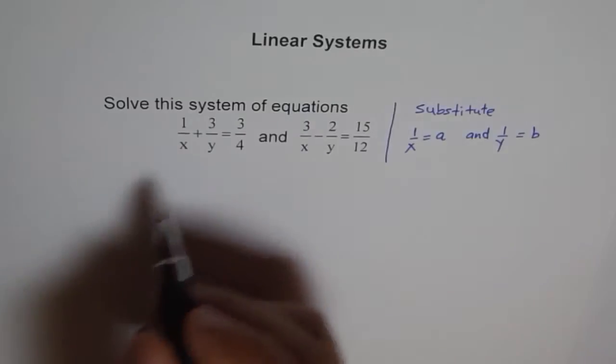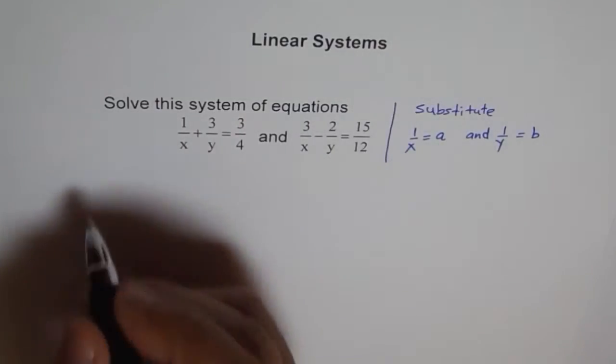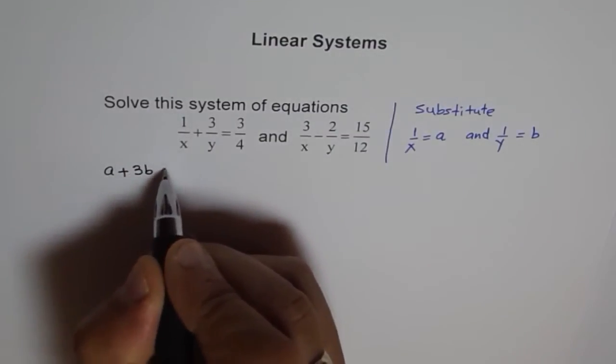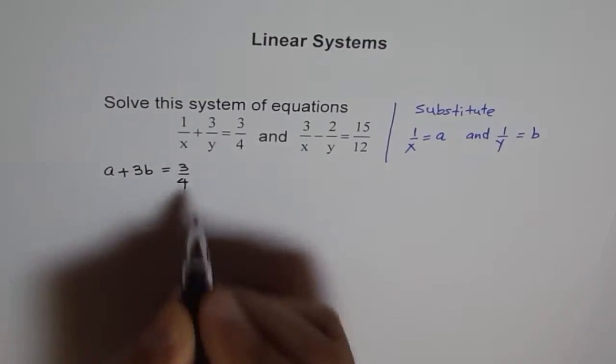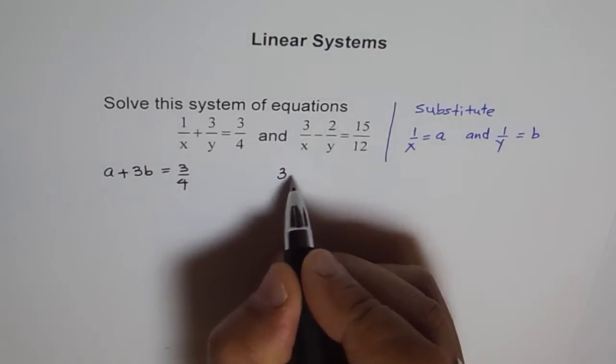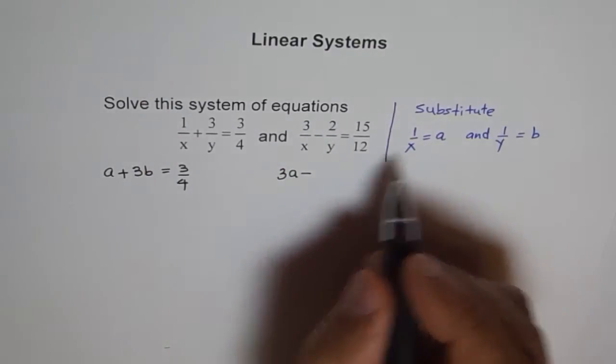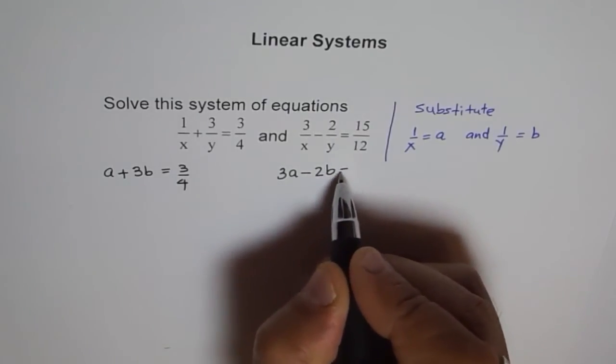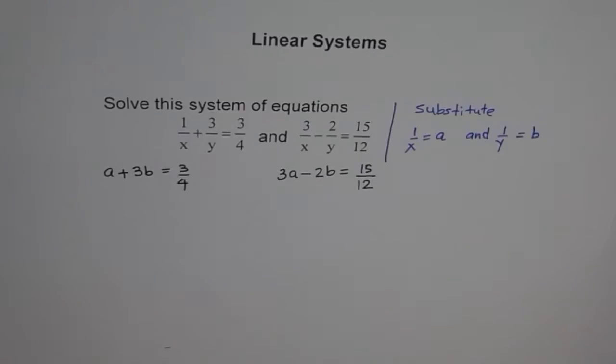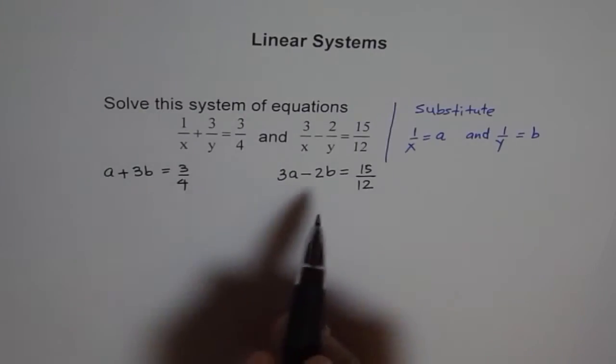So for 1 over x is A, I'll write A plus 1 over y is B, so A plus 3B equals 3 over 4. That's my first equation. And the second equation becomes 1 over x is A, so it is just 3A minus 2B equals 15 over 12. Do you see that magic? It converted that rational equation into a linear equation. Now I think it's easy for us to solve because we've been doing these kinds of equations a lot.